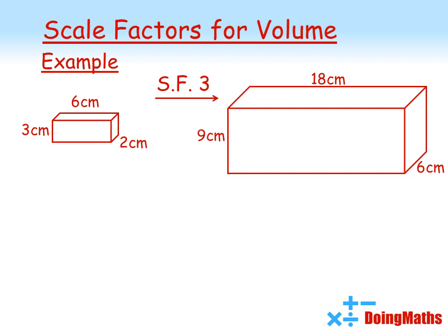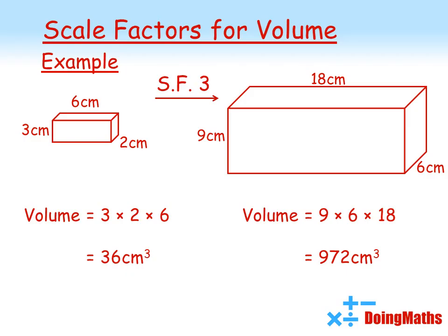What about enlarging volumes? Here we have a cuboid of 3 centimeters by 6 centimeters by 2 centimeters. It's been enlarged by a scale factor of 3. Every one of those sides has been multiplied by 3. The volume of a cuboid is height times width times length. The volume of the small cuboid is 3 times 2 times 6, giving us 36 cubic centimeters. The large cuboid has a volume of 9 times 6 times 18, giving us 972 cubic centimeters.